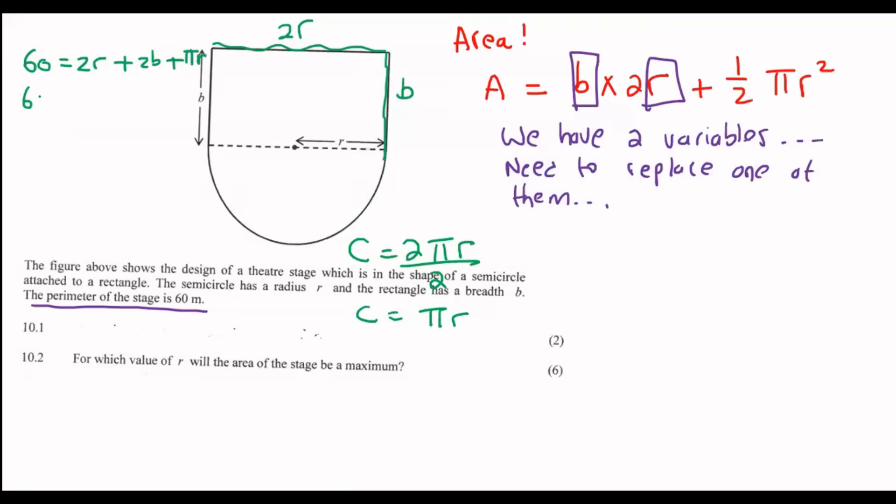Let's simplify that. 60 = 2R + 2B + πR. Now we could either get the R value alone or the B value alone. It doesn't really matter. But I'm going to get the B value alone. So 2B = 60 - 2R - πR. Then I'm going to divide everything by 2. So that's going to give me B = 30 - R - ½πR.